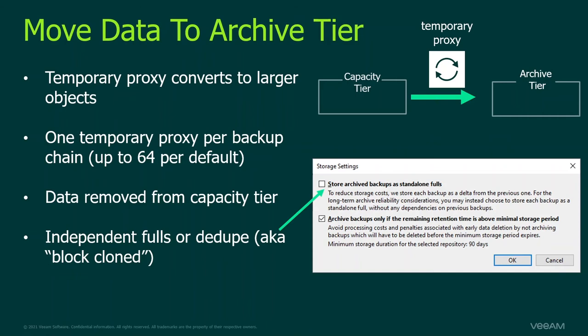We do this using a temporary proxy spun up in AWS or Azure, depending on your choice, and we move backup files to the archive tier. You can set the option to store them as an independent full, after which the data gets removed from the capacity tier — saving storage for long-term retention. With Amazon it's also possible to have locking on the archive tier, giving you complete immutability across all tiers: an XFS repository in the performance tier with immutability, a copy to S3 with immutability, and a move to the archive tier also with immutability.